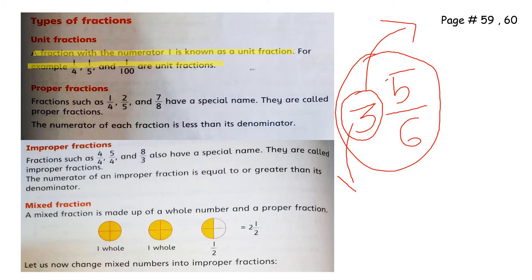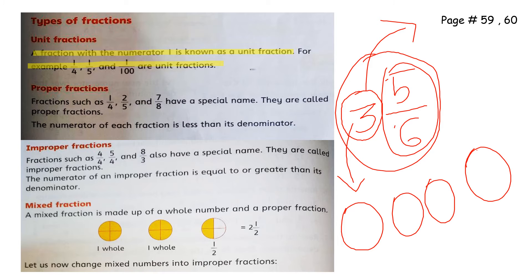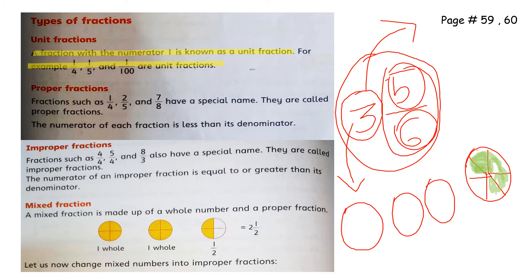The mixed fraction 3 and 5 by 6 means we have three complete circles, and the fourth circle is not complete — it is divided into six parts, of which five parts are shaded. That is how we represent a mixed fraction as a figure.